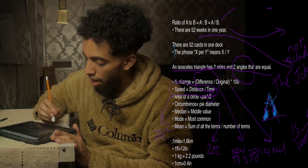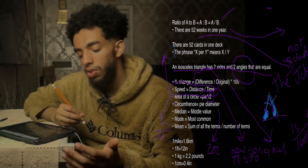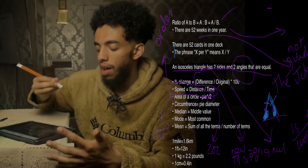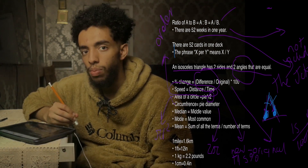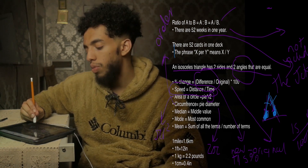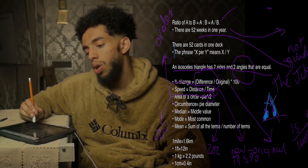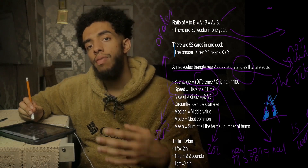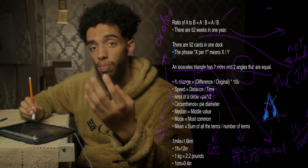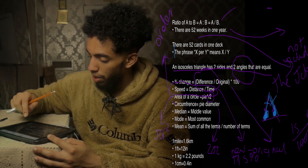The median is the middle value in an ordered set of data — make sure you know that. Mode is the most common value. The mean is the sum of all the terms divided by the number of terms. For example, if there are three numbers — 4, 5, and 6 — the sum is 15 and there are 3 terms, so 15 divided by 3.